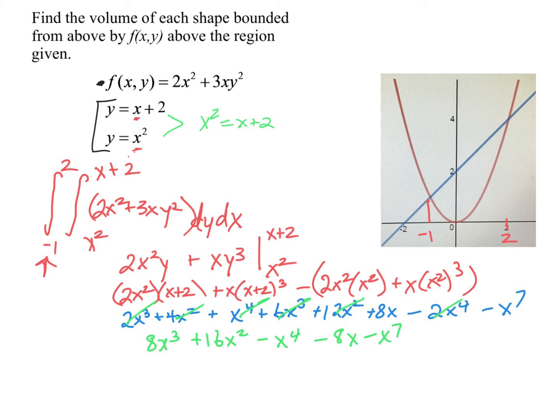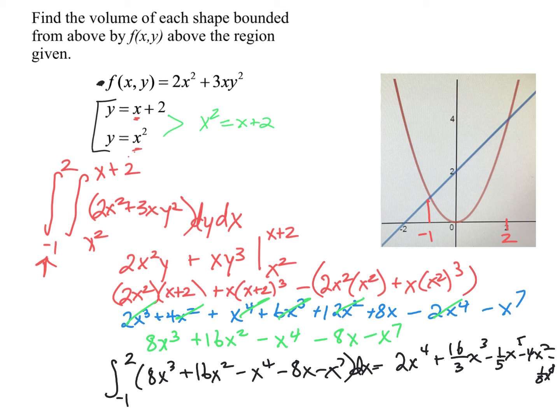All right, I've combined my like terms. So now what's left to do is to integrate this from negative 1 to 2. So I'm going to run out of room here, but let me do maybe just a little bit further, and then I might stop. All right, so we've got, raise the power, divide. We've got 2x to the 4th plus 16 thirds x cubed minus 1 fifth x to the 5th minus 4x squared minus 1 eighth x to the 8th. And then we would plug in 2 and negative 1 to that answer. And that would give us the volume. I'm going to just write we would evaluate this. I'm going to do that at 2 and negative 1.